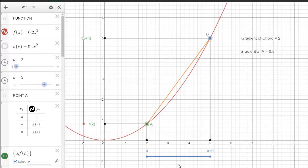Now if I make this length here, h, smaller and smaller, that is if I bring this point here down along the curve, then the gradient of this chord here tends towards the gradient at point A. So you'll see that happening here.